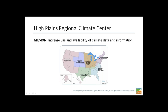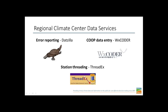Along with our sister centers on the map, we collectively cover the entire country. We do that with the purpose of providing climate data and information to the public for decision making. At the heart of everything that we do is data. Chances are, if you have ever worked with climate data, you have been impacted by the regional climate centers, whether you knew it or not.